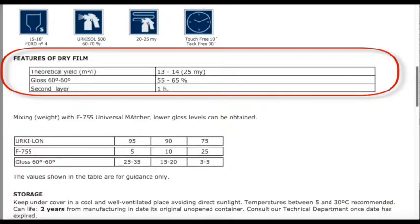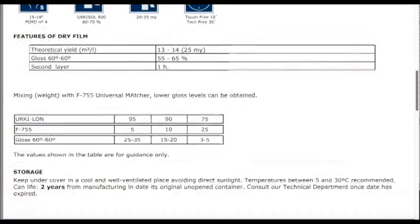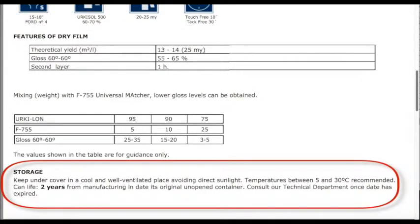Next down, it has Gloss. So it's telling you how shiny the paint is going to be when it's totally dried. The gloss level, which is measured in percentages, is between 55 and 65%. Down from that, Second Layer. It's saying one hour. So basically, after an hour of drying at 20 degrees, which is the industrial standard, you can apply a second layer. And below is Storage, which is fairly self-explanatory.